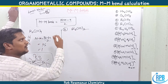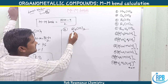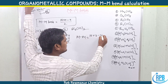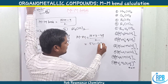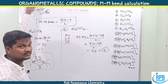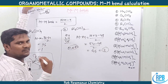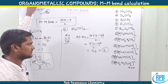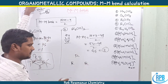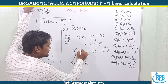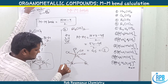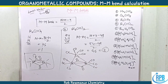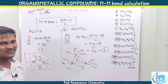Now for Fe₃(CO)₁₂: three Fe atoms give 3×8 = 24 electrons, and twelve carbonyls give 24 electrons, totaling 48 valency electrons. Metal-metal bonds = (18×3 − 48) / 2 = (54 − 48) / 2 = 6/2 = 3. Three metal-metal bonds are observed. In a trinuclear complex the three metals form a triangle. The structure of Fe₃(CO)₁₂ shows one Fe with four terminal carbonyls and the other two Fe atoms each with three terminal carbonyls plus two bridged carbonyls.